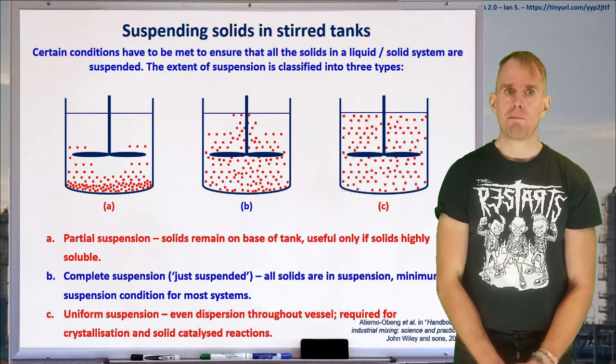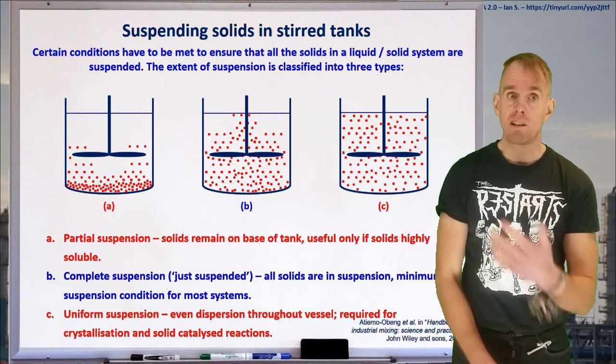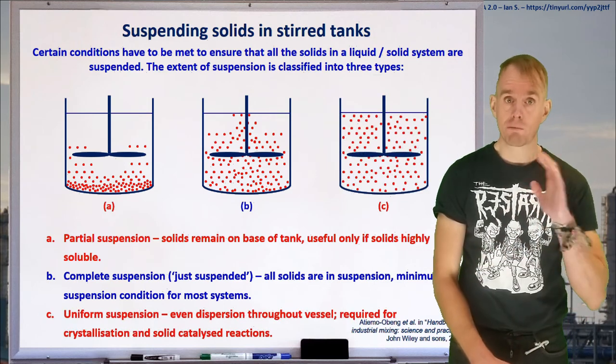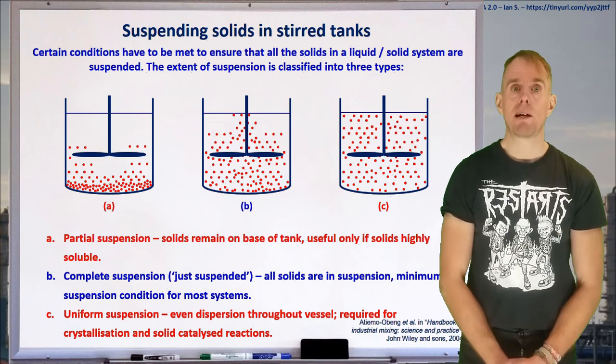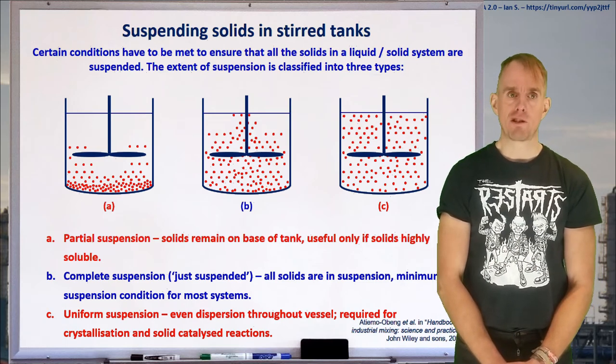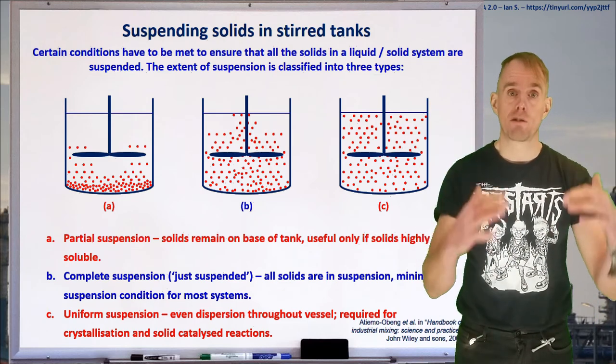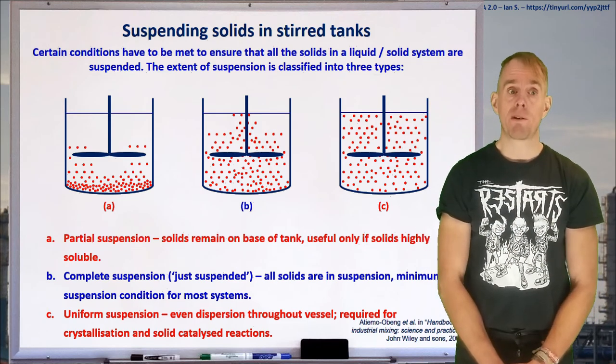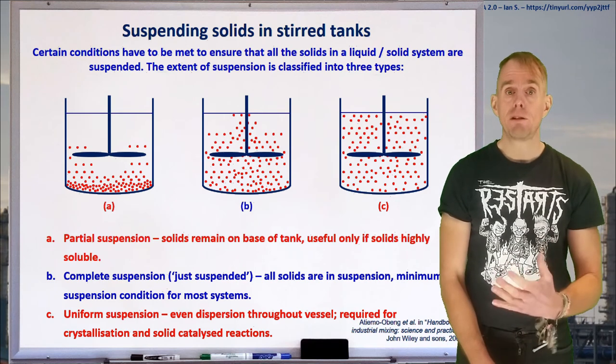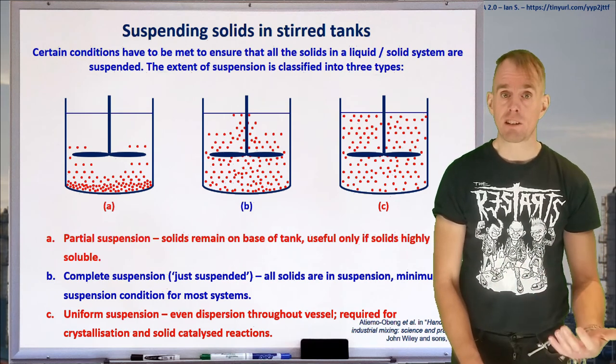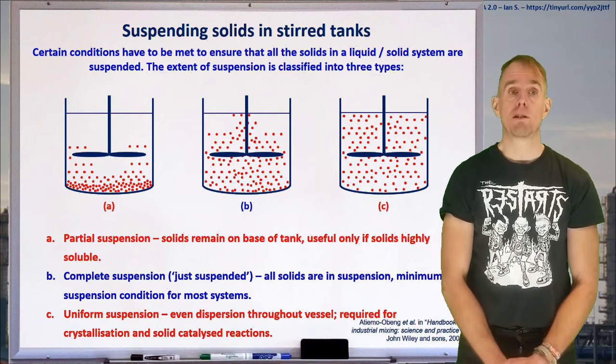If we put more energy into the system, by maybe changing our agitator design and increasing the torque on it, or just turning it faster, then we may be able to achieve uniform suspension. And it does exactly what it says on the tin. This is where you have a uniform concentration of particles spatially all throughout your system. And this can be useful if you've got, say, heterogeneous catalysis, or maybe a crystallization process.